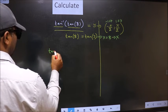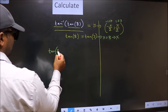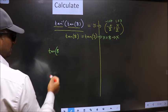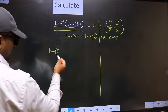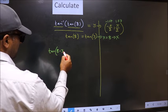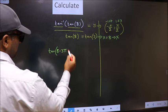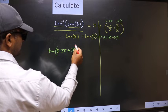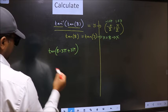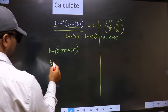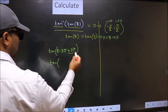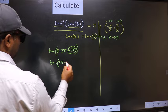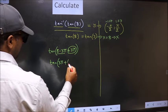Tan 8 exceeds that interval, so we should decrease it. To decrease, I subtract 3 pi. Now whatever we are subtracting, we should also add the same thing. Now 3 pi I write at the start, followed by this in the brackets.